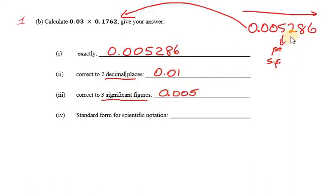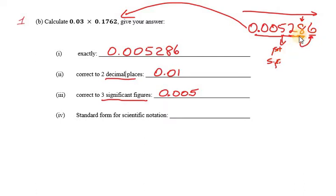We only want three significant figures. This is our second significant figure, and this is our third. We're writing up to the third significant figure — counting from 5, 2, and 8. We always ask: do we write the required significant figure or add one to it? Check the next digit. If it's 5 or more, we add one. So it's going to be 0.00529. The 8 rounds up to 9 because the very next digit after the 8 is 5 or more. So we have three significant figures with placeholders at the beginning.